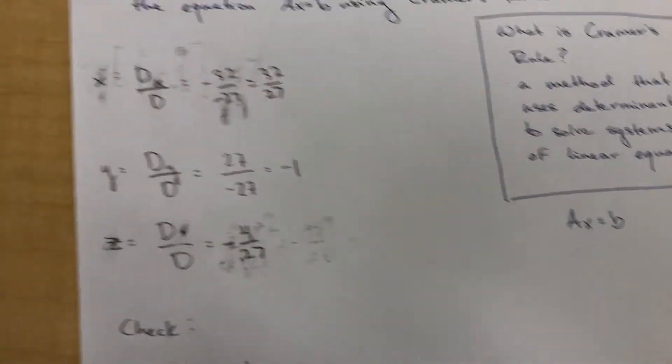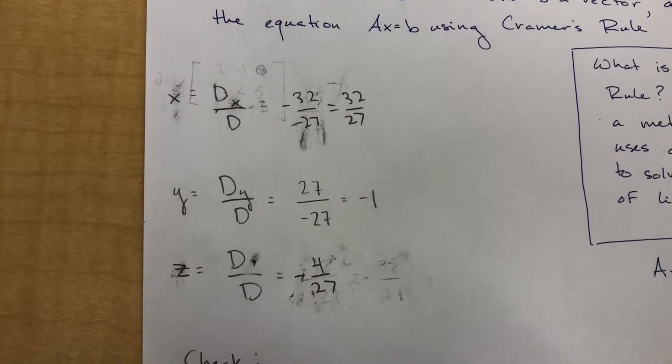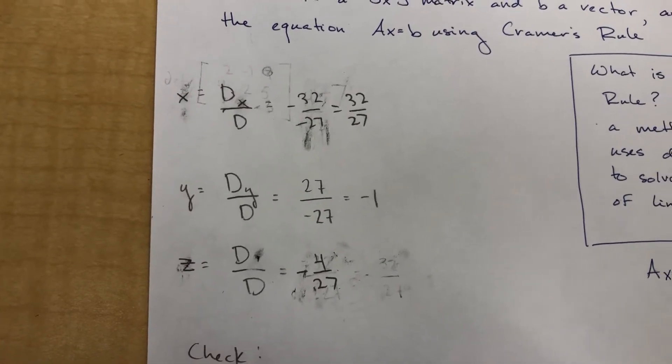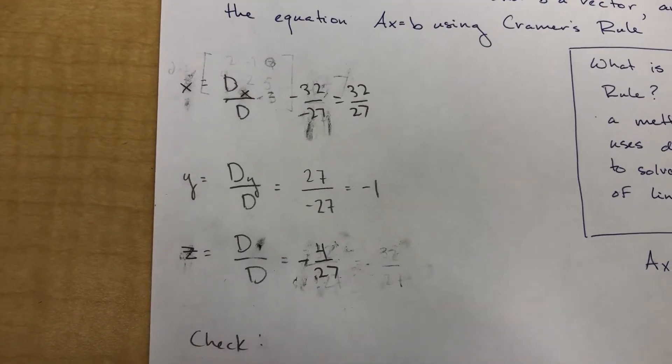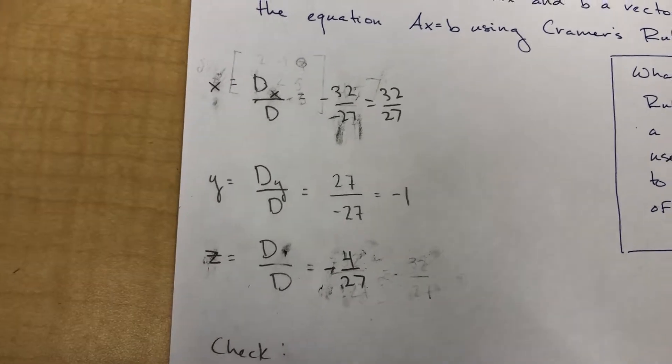So then to find the vector you do DX over D, DY over D, and DZ over D, which helps to find the vector X.